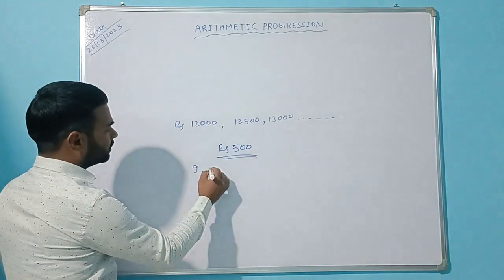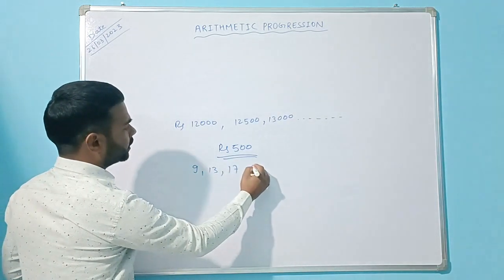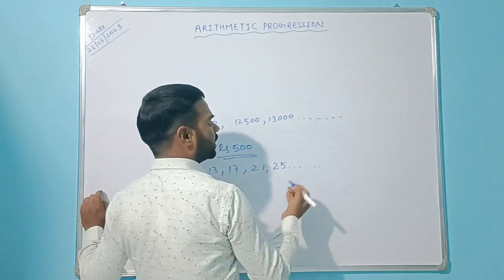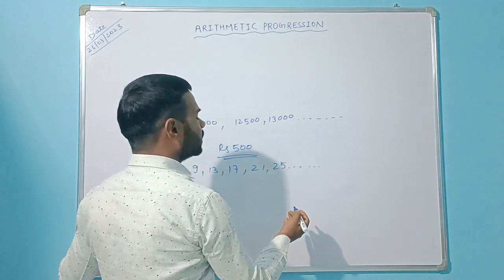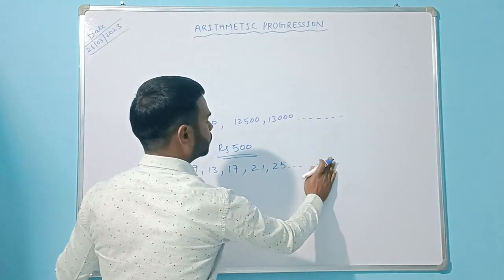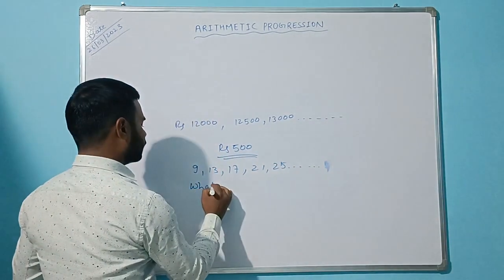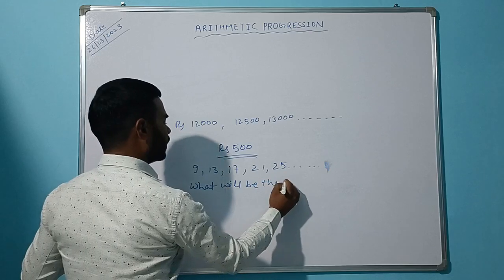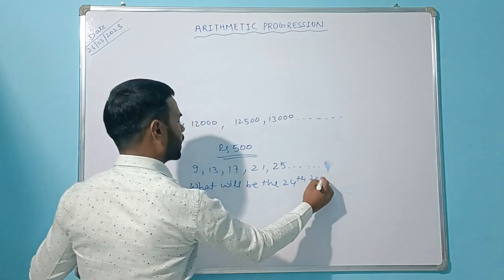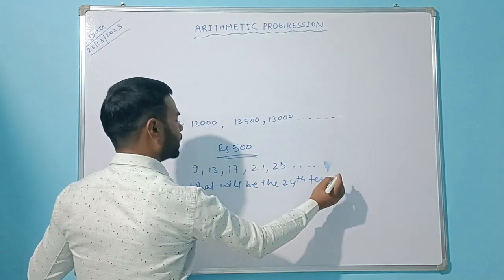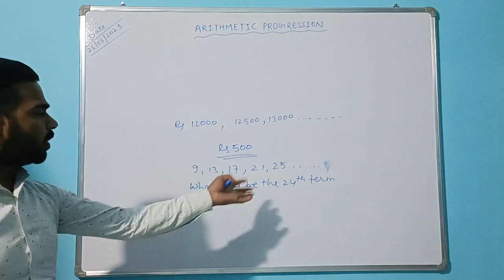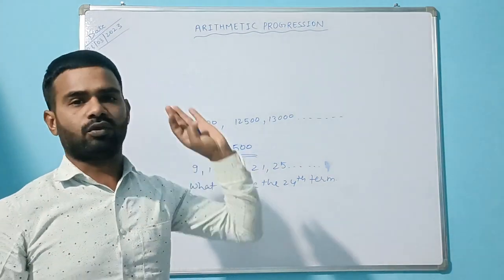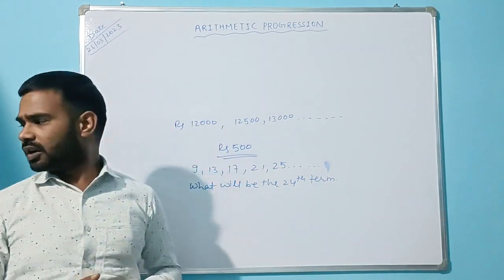Let us take one more example: 9, 13, 17, 21, 25. What will be the next term? And what will be the 24th term? In order to calculate the 24th term, we are going to derive a formula.